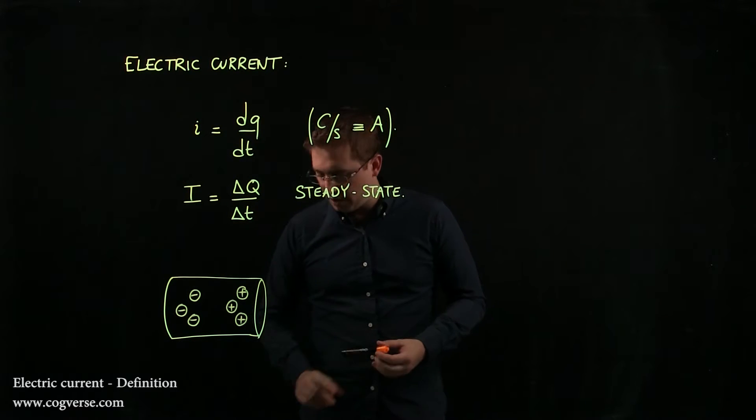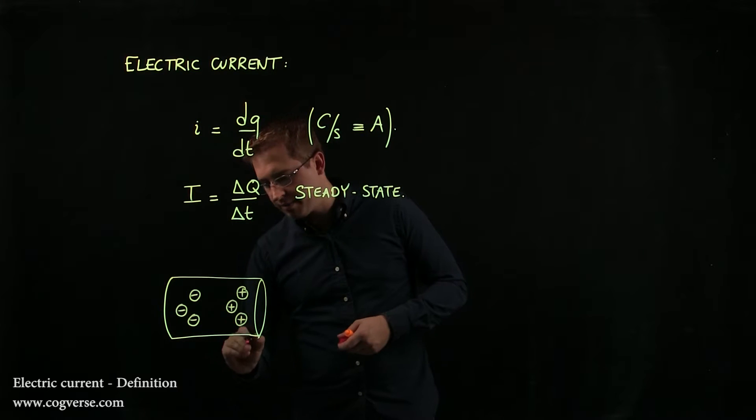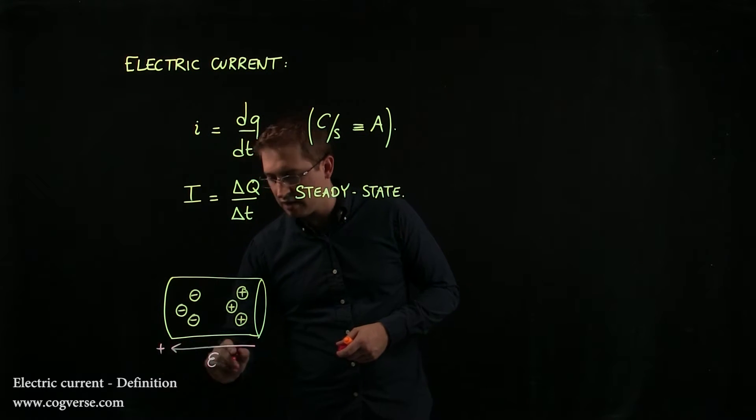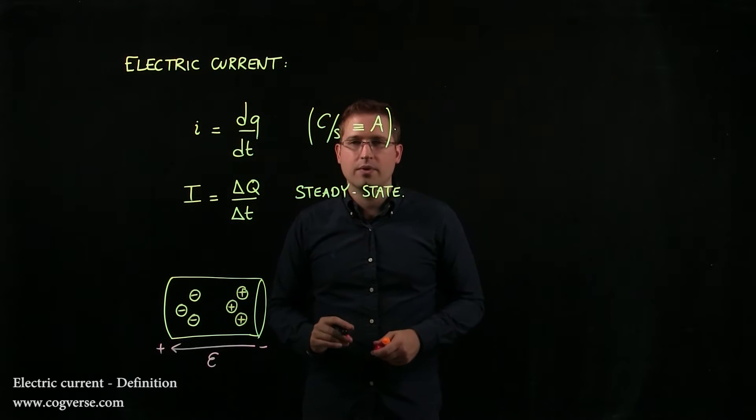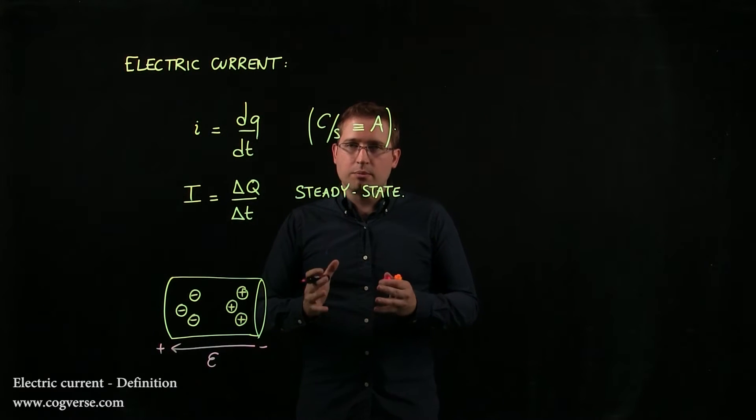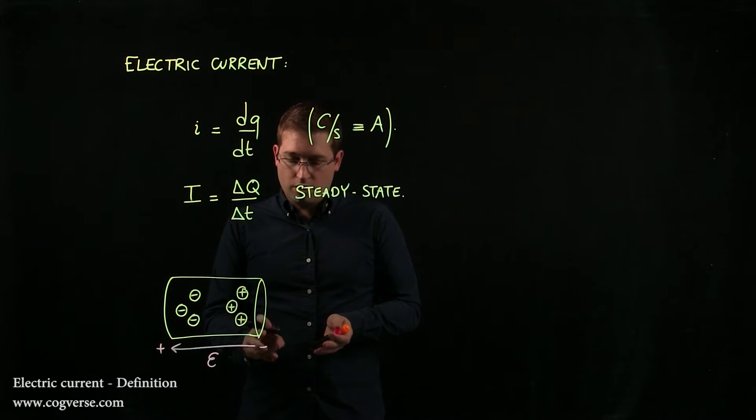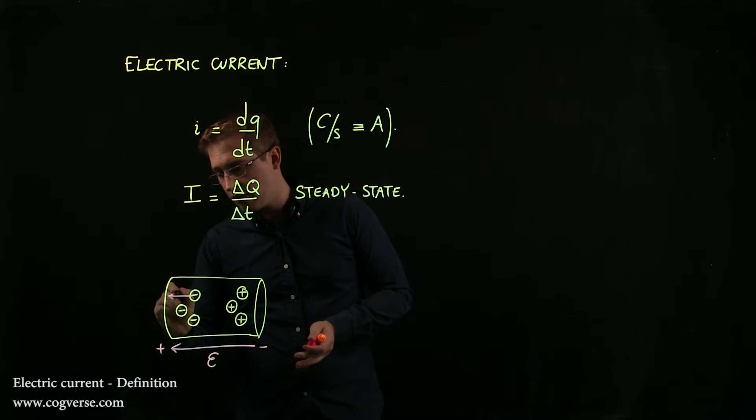Now, the truth is, if we apply a voltage epsilon across this conductor with the positive end here and the negative end here, well, the only charges that can move are the electrons. And the electrons are going to move away from the more negative side, and so they're going to go this way.